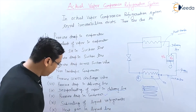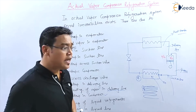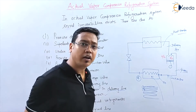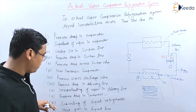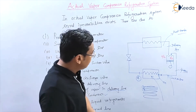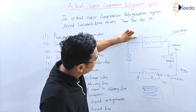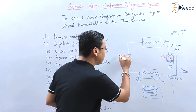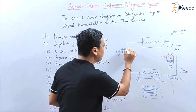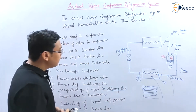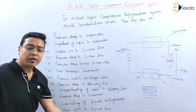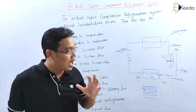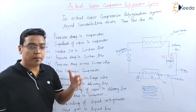The next point is subcooling of the liquid refrigerant. In the condenser, extra heat is given to the surrounding, so subcooling of the liquid refrigerant occurs within the condenser itself. Additionally, there is heat gain in the liquid line before the expansion valve, where the refrigerant absorbs heat. All these irreversibilities make the actual vapor compression refrigeration system different from the ideal one.